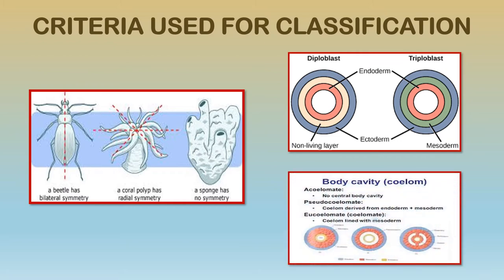Organisms are also divided on whether they have a body cavity or coelom. There are three subcategories: acoelomate means no central body cavity — the body cavity is where visceral organs like the digestive and respiratory systems are housed, separated from the rest of the body. Pseudocoelomate animals have a false or not-true body cavity. Eucoelomate animals are triploblastic and have a true body cavity.